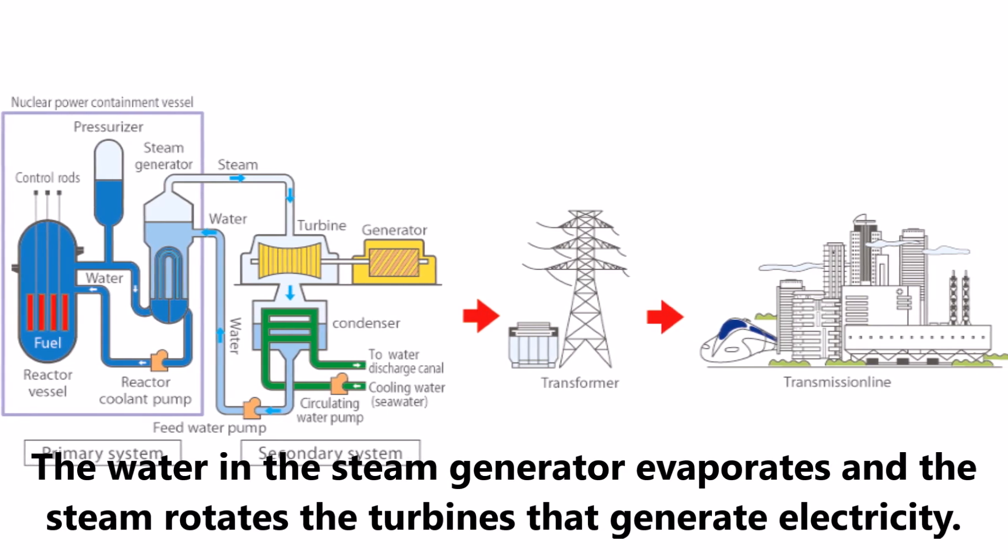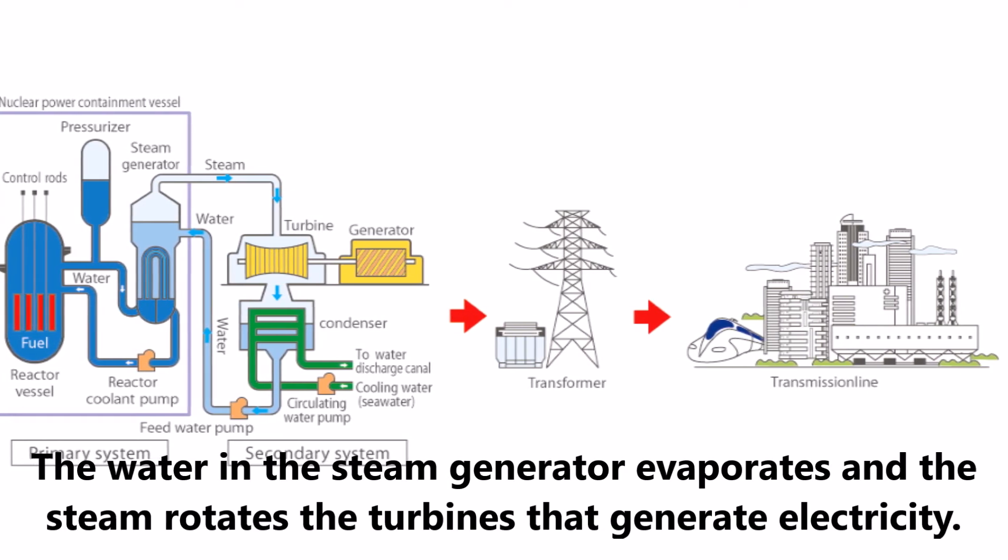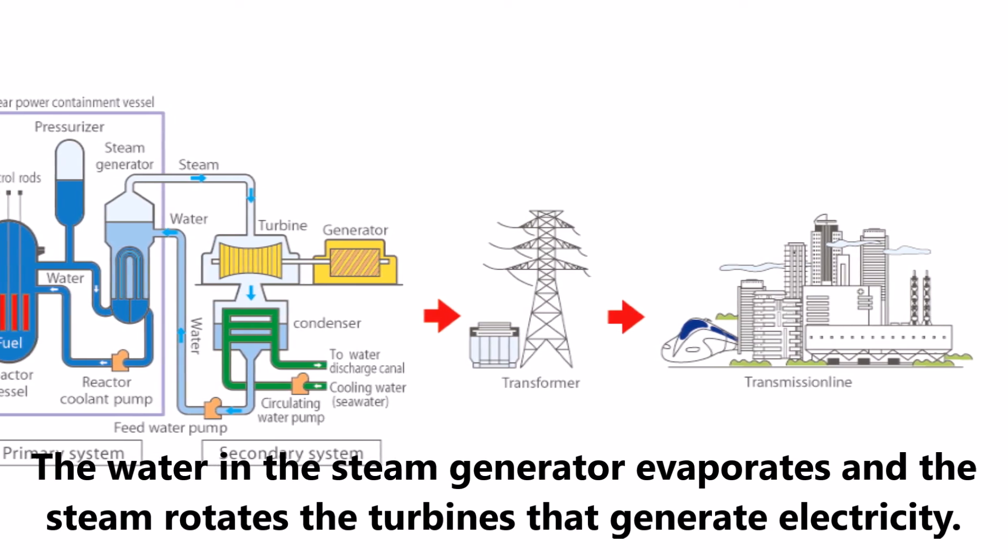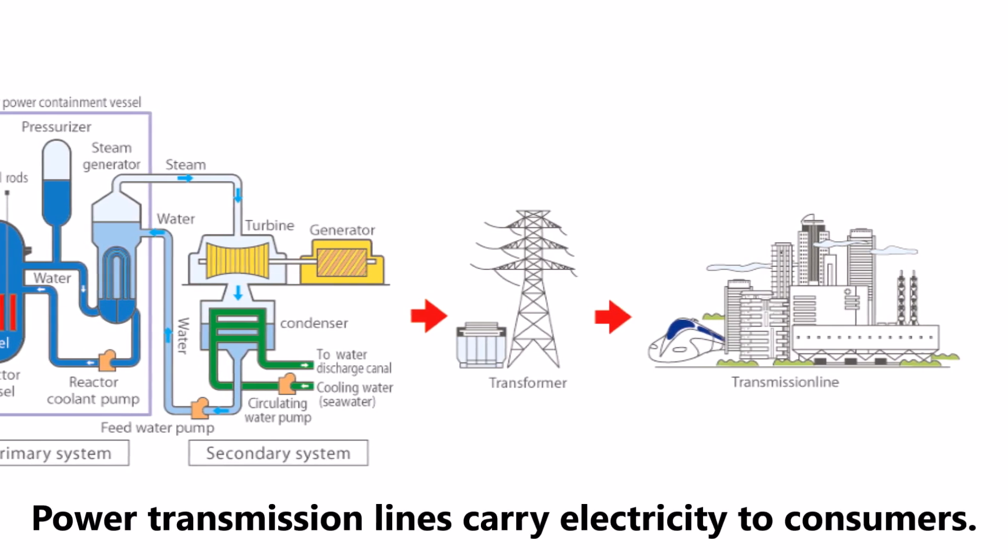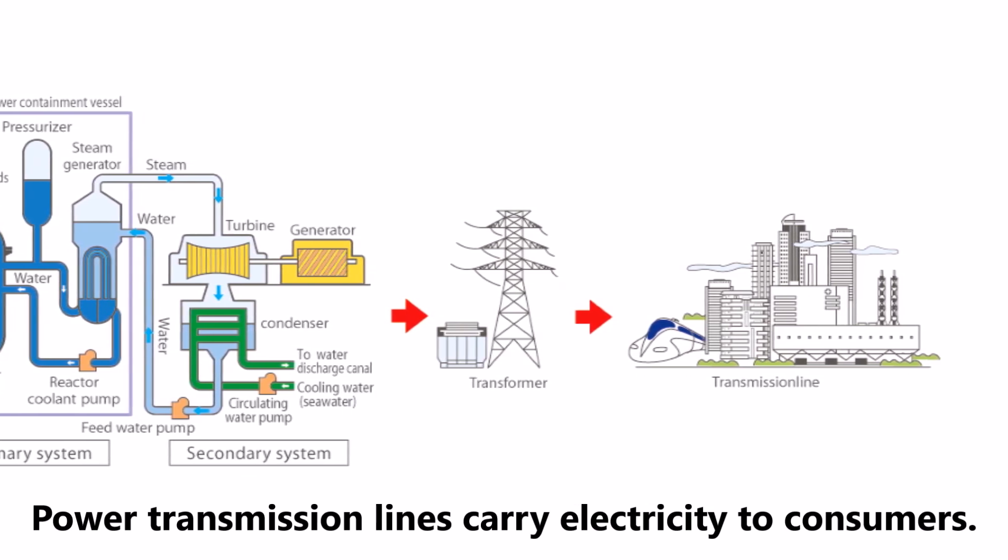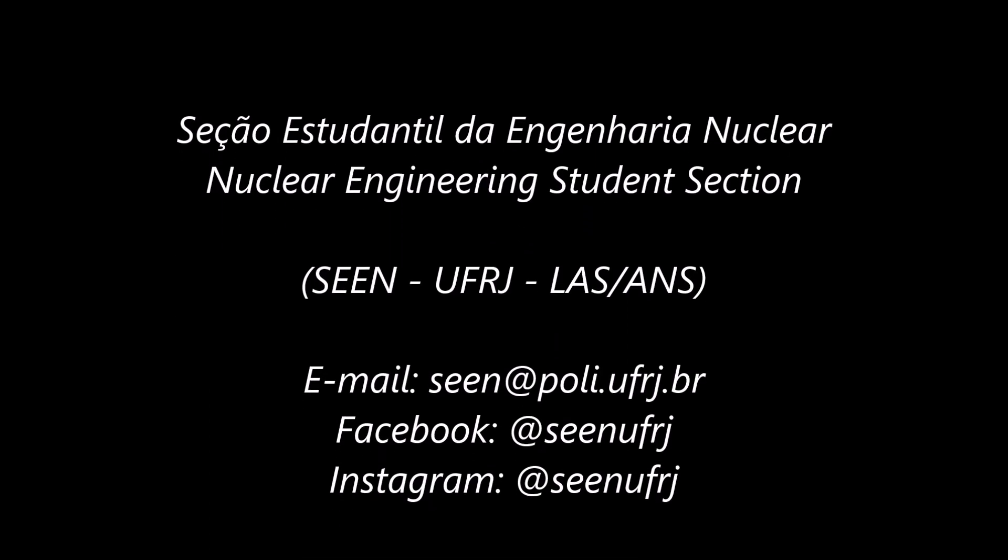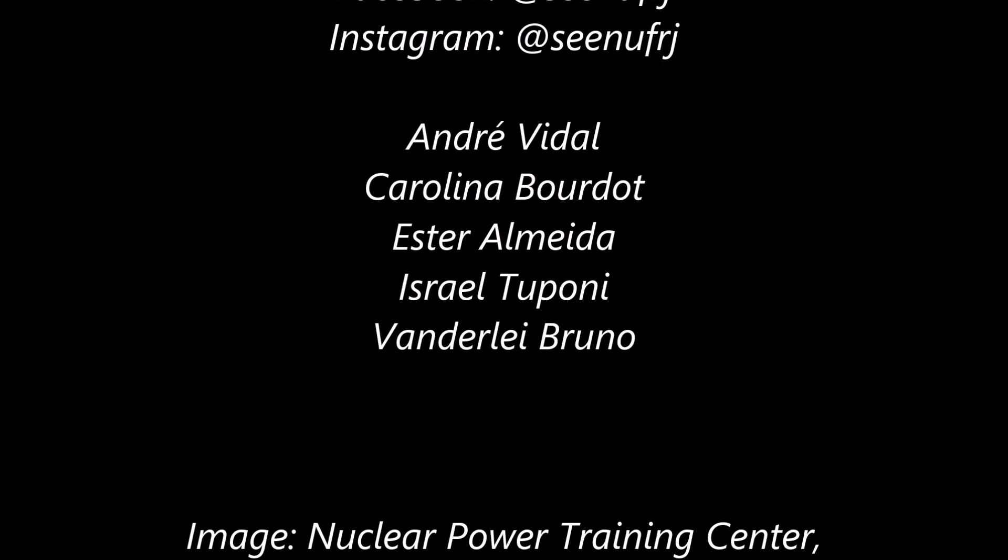The water in the steam generator evaporates, and the steam rotates the turbines that generate electricity. Power transmission lines carry electricity to consumers.